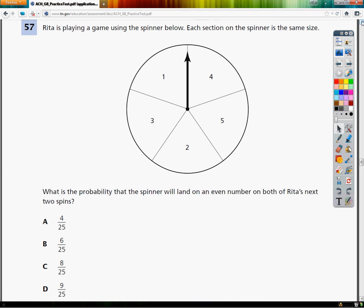Rita is playing a game using the spinner below. Each section on the spinner is the same size. What is the probability that the spinner will land on an even number on both of Rita's next two spins?